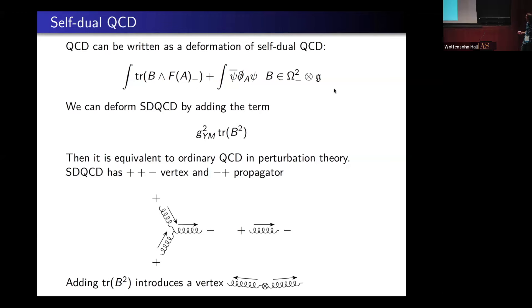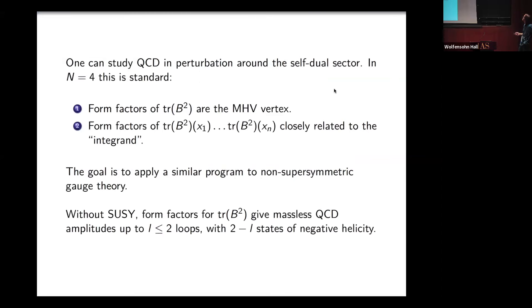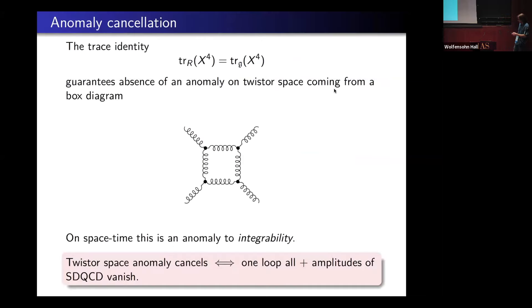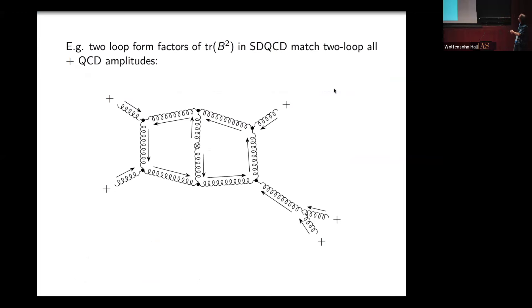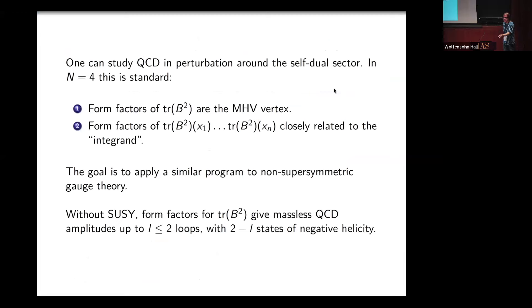I'm going to draw the direction that this helicity goes by this arrow. Adding trace B squared introduces a vertex like this, because it's a minus, minus vertex. You can study QCD in perturbation theory around the self-dual sector, and many people have done this.